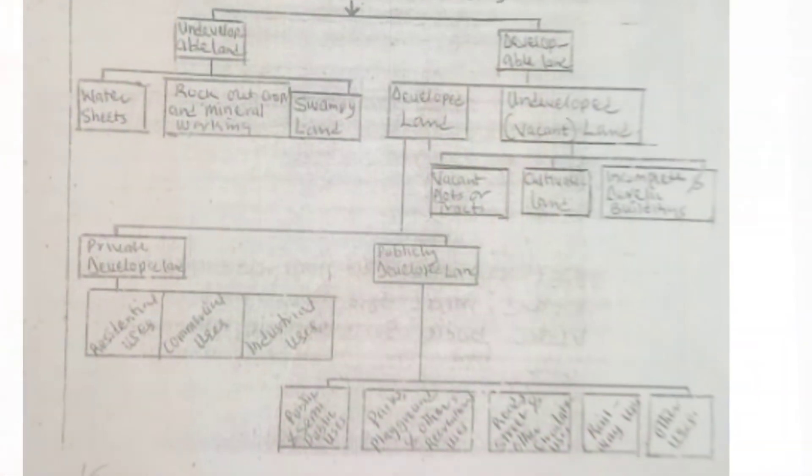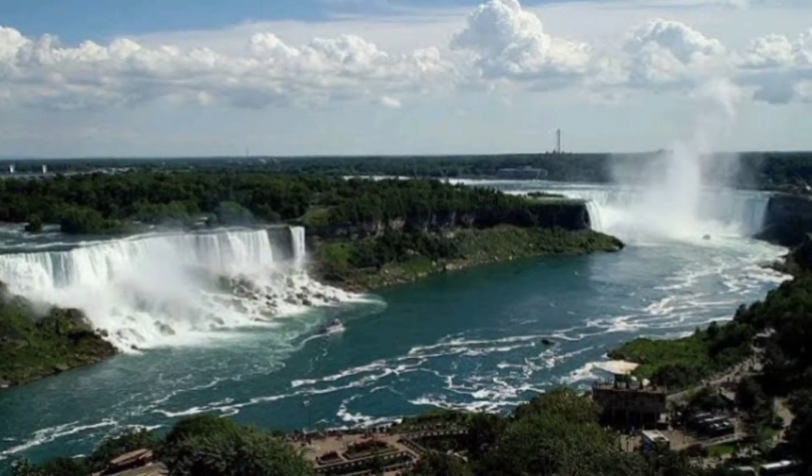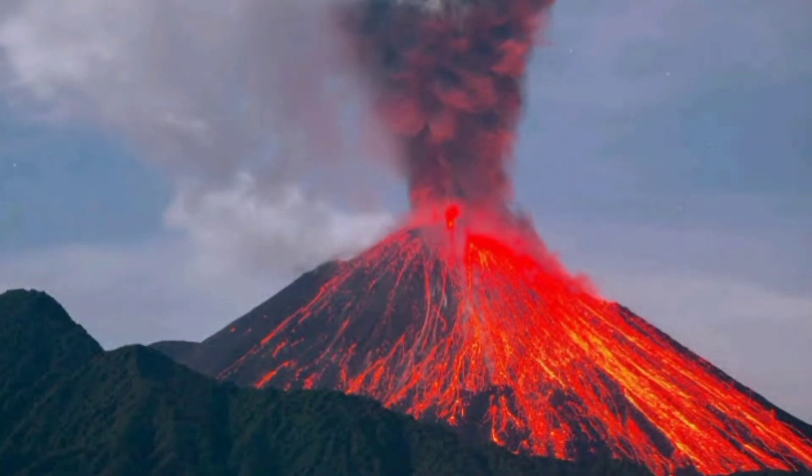Under the developable land, we have the developable and the under-developable. Under-developable land can be said to be uncompleted structures, uncompleted buildings, land set aside for agricultural use, or land set aside for future purposes — but it can still be developed, that's why it's under-developable. Now the undevelopable land involves constraints that affect development, such as large areas of water, big mountains that houses cannot be built upon, and valleys and volcanoes.